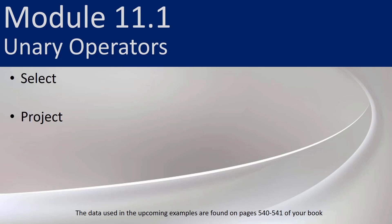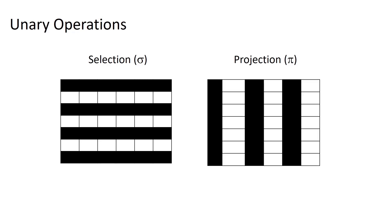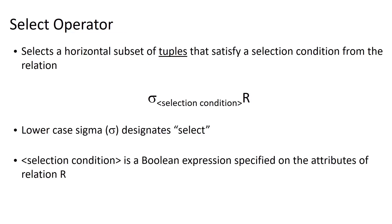In module 11.1, we are going to be talking about two unary relational algebra operators: SELECT and PROJECT. We already talked about these a little bit. SELECT returns a horizontal subset of tuples, while PROJECT returns a vertical subset of attributes, thereby reducing the degree of our relation, while the SELECTION operation reduces the cardinality of the relation.